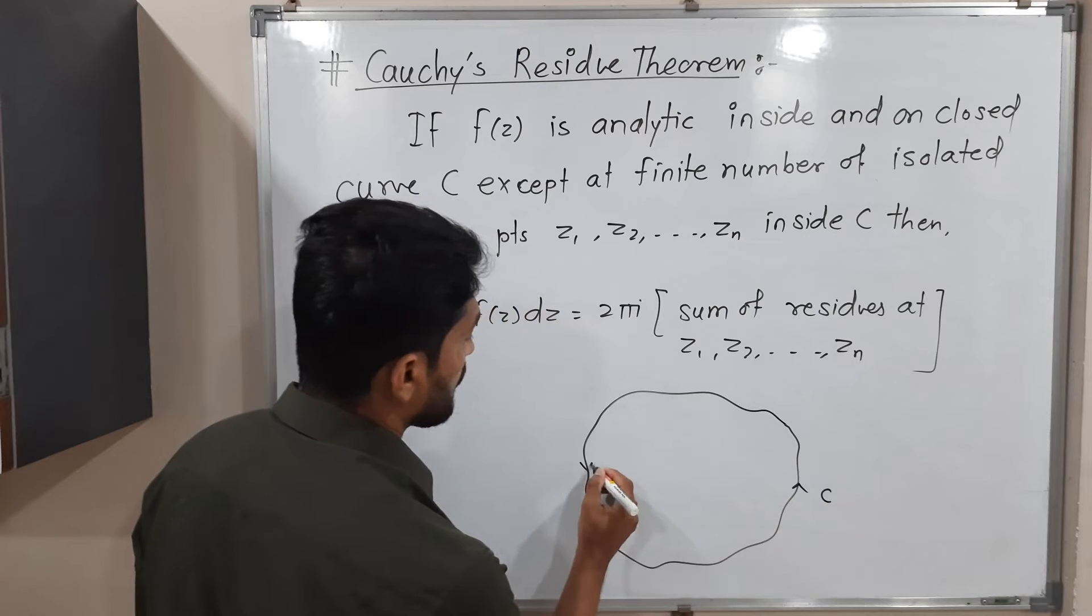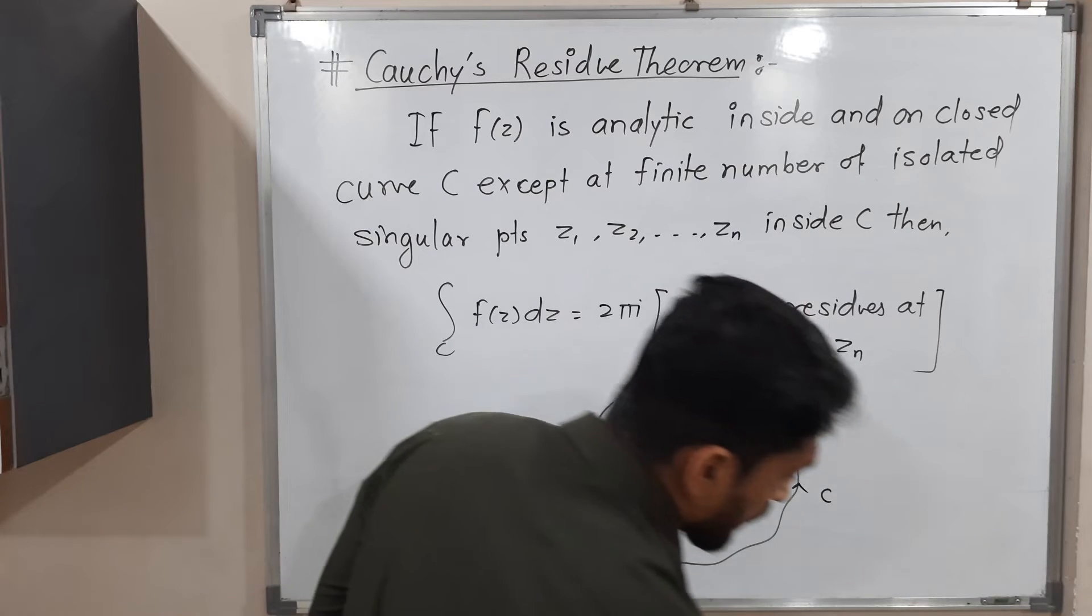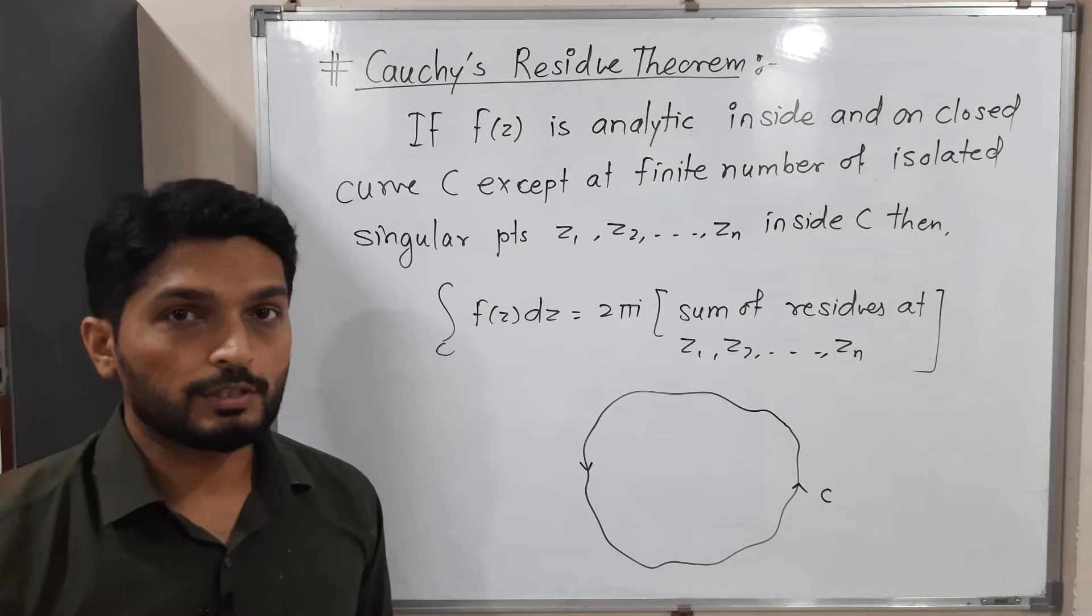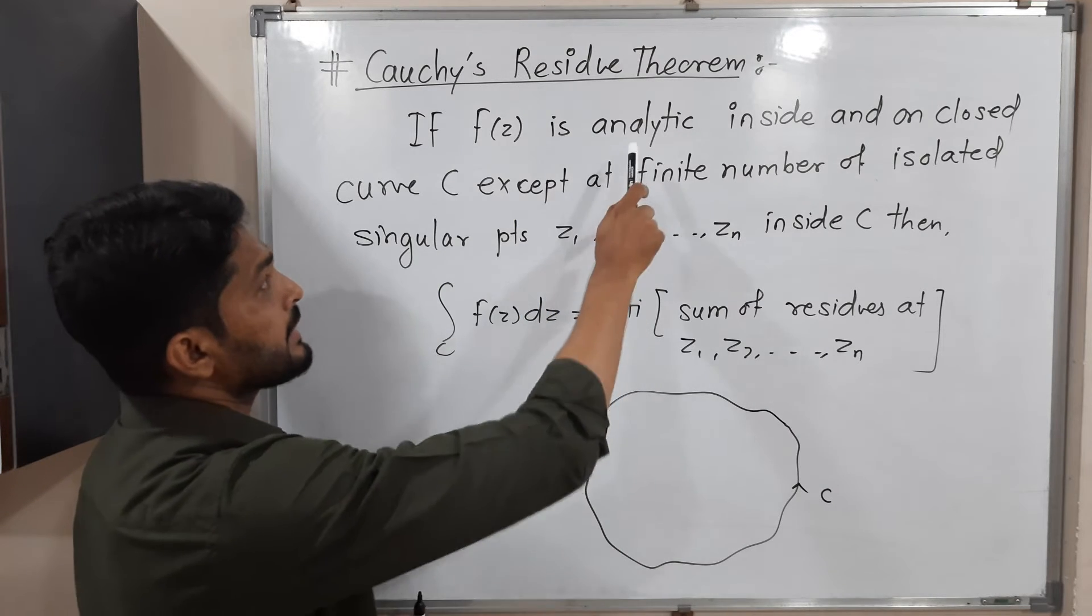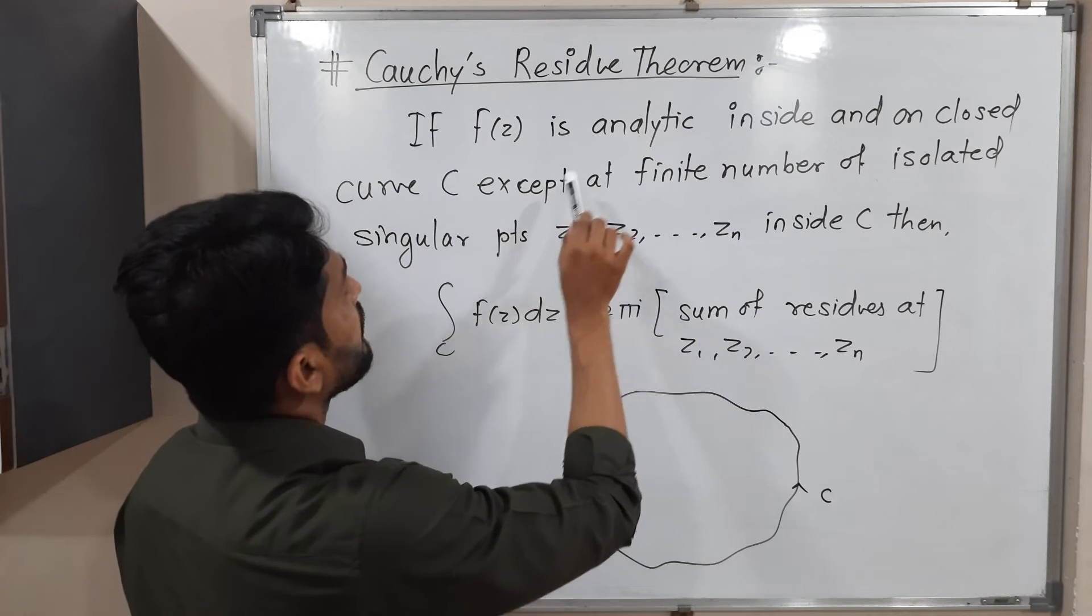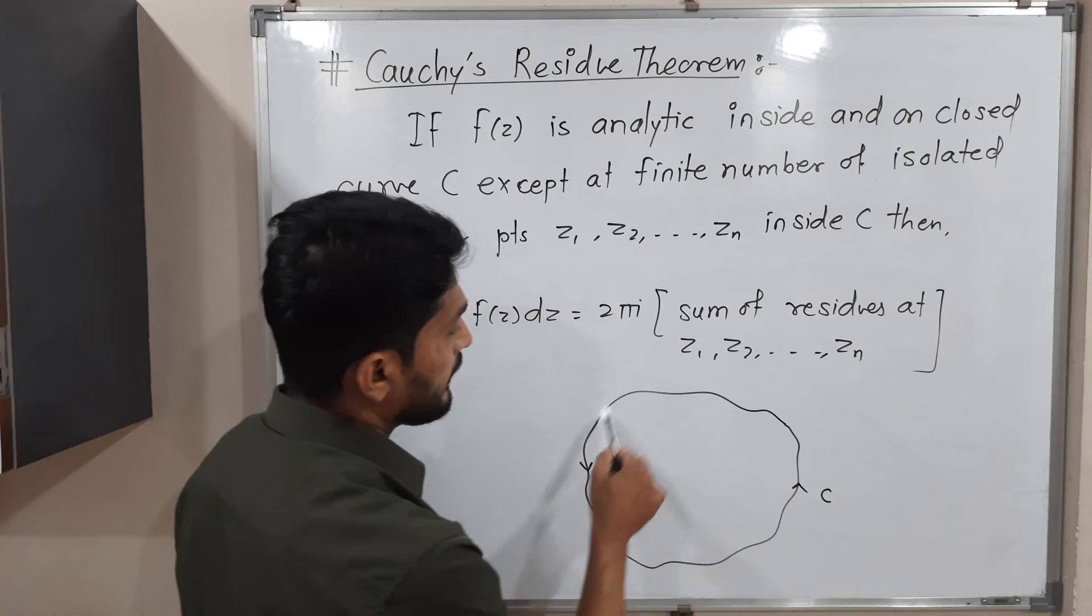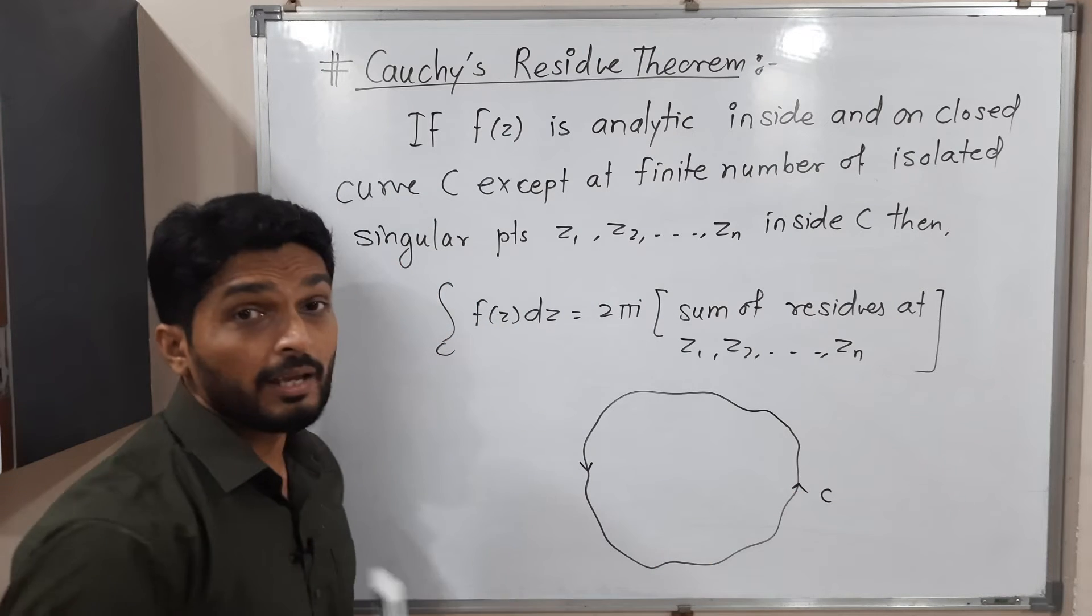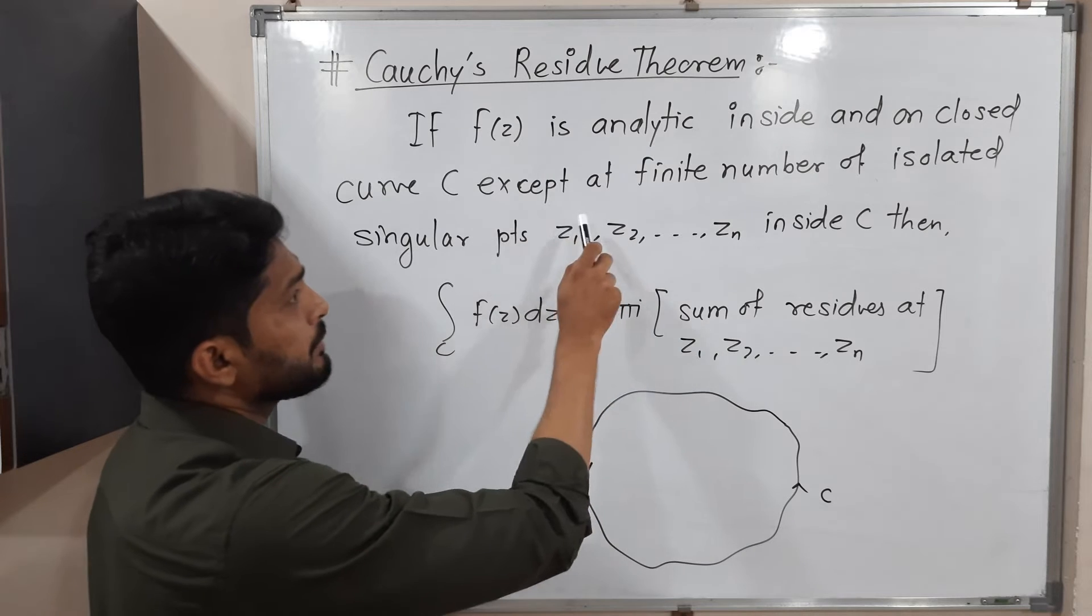C is a closed curve, and we have one function f which is defined on this closed curve C. The function is analytic everywhere inside and on this closed curve C, except at some points, that means it is not analytic at some points.